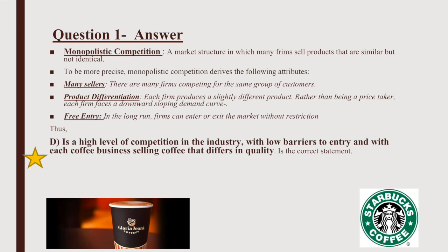Product differentiation: each firm produces a slightly different product, and rather than being a price taker, each firm faces a downward-sloping demand curve — furthermore ruling out A, due to its stating each coffee business sells the same type of coffee. Free entry: in the long run, firms can enter or exit the market without restriction. By the process of elimination, D ticks all the necessary boxes: high competition, low barriers to entry, and each coffee business selling coffee that differs in quality.